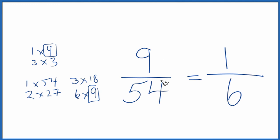So the fraction 9/54 can be simplified to 1/6. These are equivalent fractions. If you divide 1 by 6 or 9 by 54, you'll get the same decimal answer. It's just that we've simplified 9/54 down to 1/6.